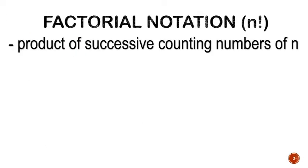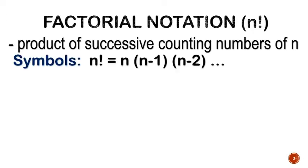Factorial notation is the product of successive counting numbers of n. Product means multiply, successive means consecutive, counting numbers. In symbol, n factorial is equal to n times the quantity n minus 1 times the quantity n minus 2, so on and so forth, until you reach the least number, which is 1.